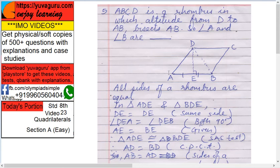Then angle DEA equals angle DEB, 90 degrees both. Why? Altitude. Altitude means 90 degrees. AE equals EB, given.